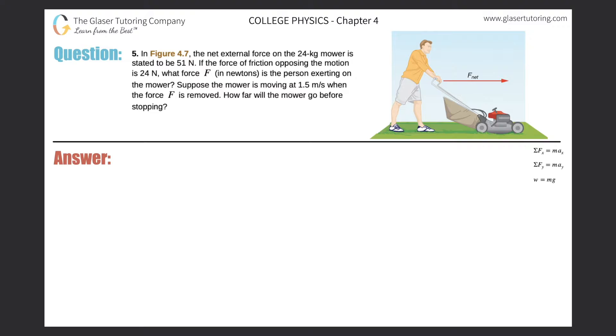Number five. In figure 4.7, the net external force on the 24 kilogram mower is stated to be 51 newtons. If the force of friction opposing the motion is 24 newtons, what force in newtons is the person exerting on the mower? Suppose the mower is moving at 1.5 meters per second when the force F is removed. How far will the mower go?